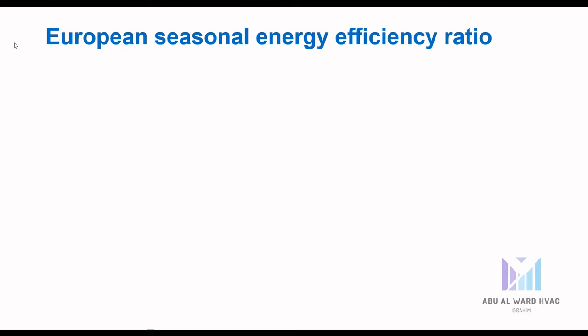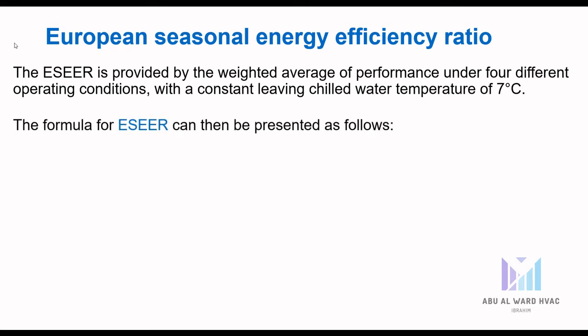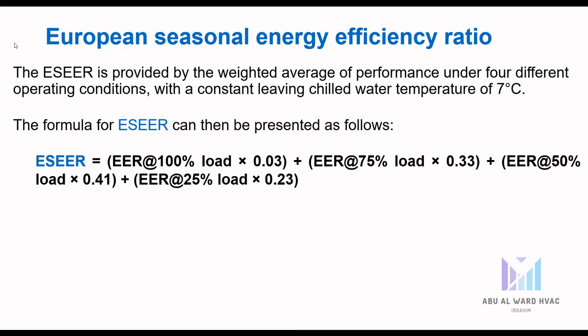The European Seasonal Energy Efficiency Ratio (ESEER) is provided by the weighted average of performance under four different operational conditions with a constant leaving chilled water temperature of 7°C. The formula is: ESEER = (EER at 100% load × 0.03) + (EER at 75% load × 0.33) + (EER at 50% load × 0.41) + (EER at 25% load × 0.23).